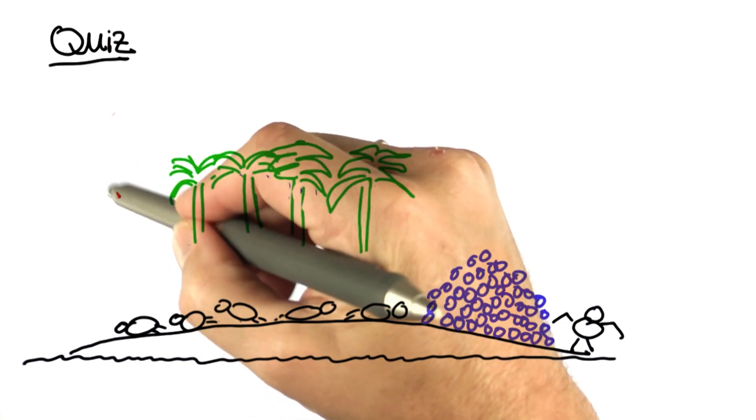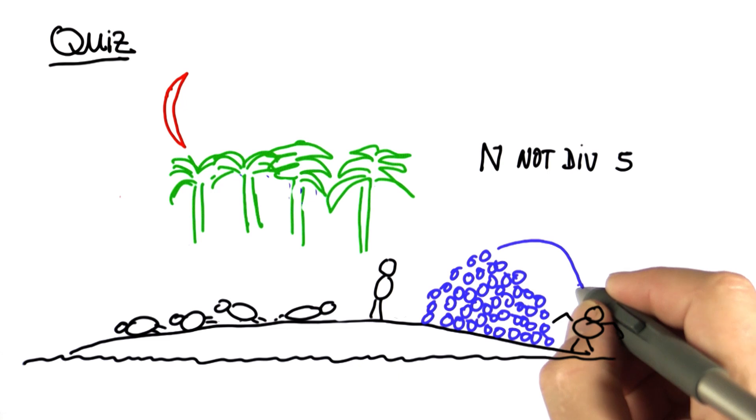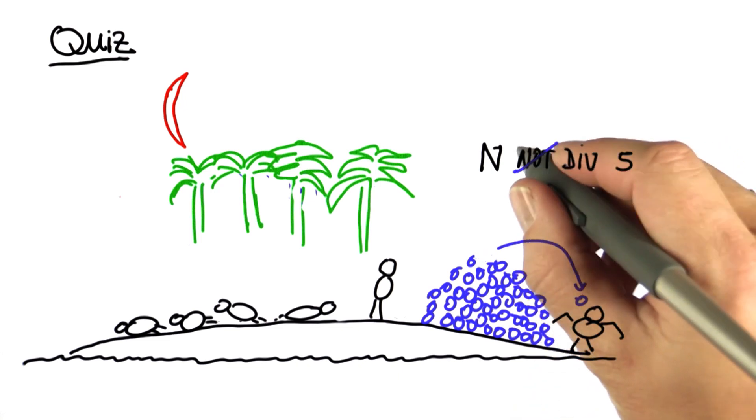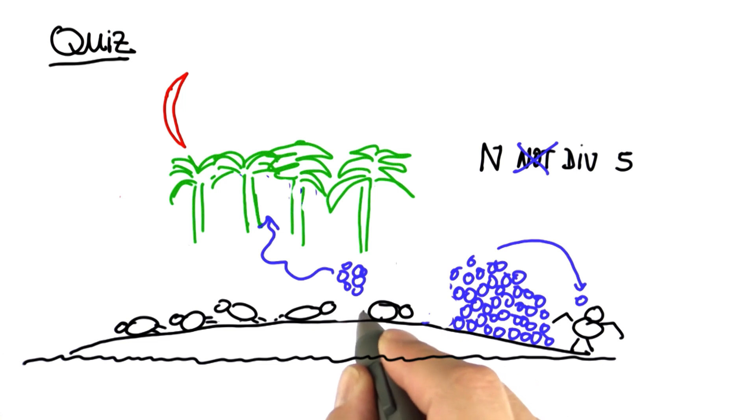In the middle of the night the first guy wakes up and he doesn't trust the others. So he decides to take his fifth right now and hide it. But unfortunately the number of coconuts is not divisible by five. However if he gives one to the monkey then the remainder is divisible by five. So he takes his fifth and hides it in a safe place. Afterwards the guy falls asleep again.